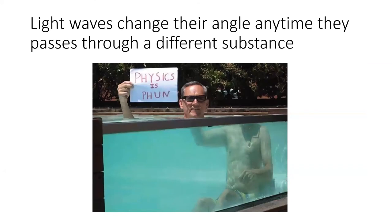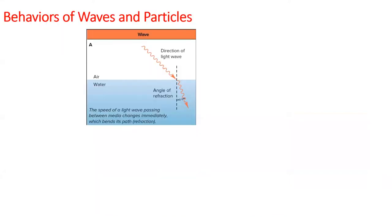Refraction of light waves in water is another example of light behaving like a wave. When a light wave enters water, its speed changes instantaneously, which changes the direction of light by a specific angle.